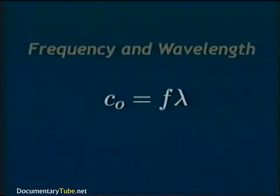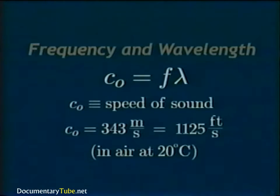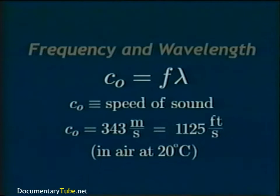For example, 1000 hertz equals one kilohertz. Frequency is inversely proportional to wavelength. The equation relating the two is c₀ = f·λ, where c₀ is the speed of sound in the medium. In air at 20 degrees Celsius, the speed of sound is 343 meters per second. This implies that longer wavelengths are associated with lower frequencies and shorter wavelengths with higher frequencies.